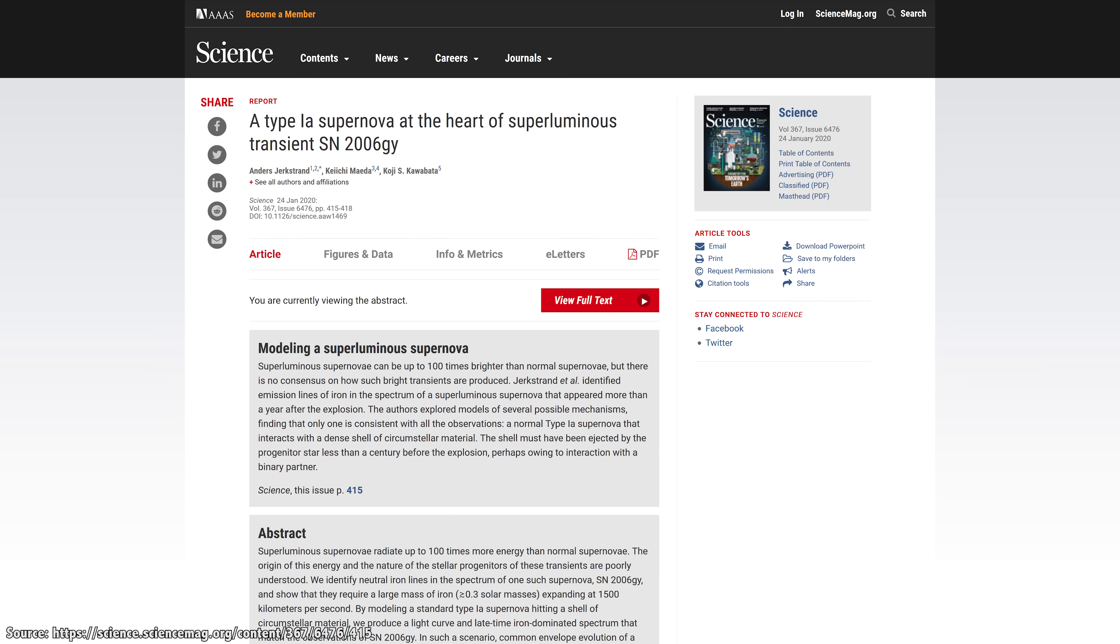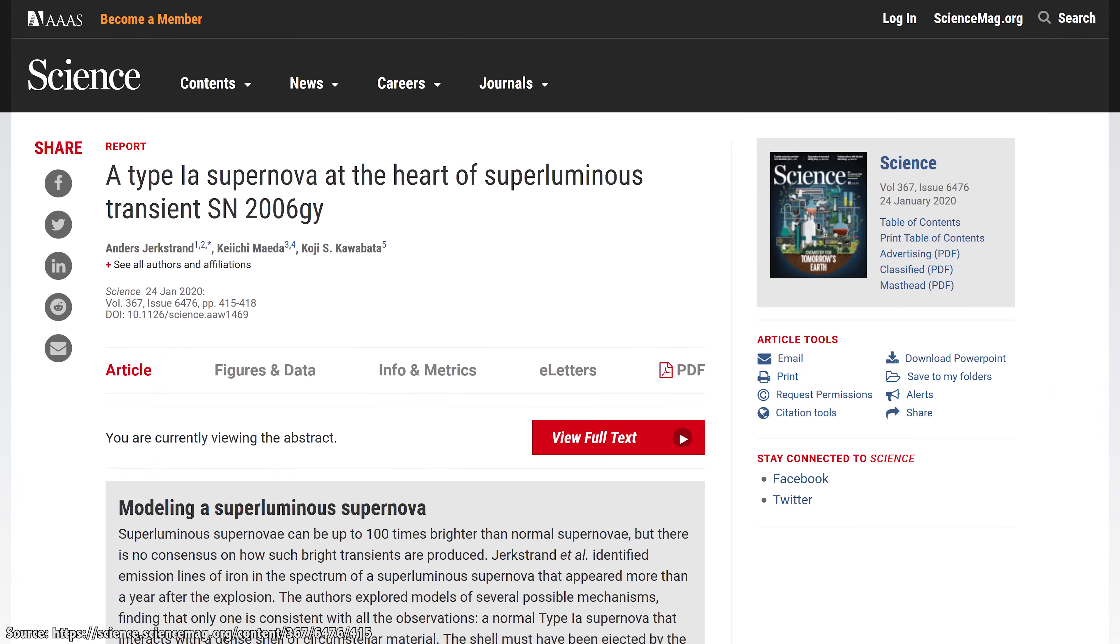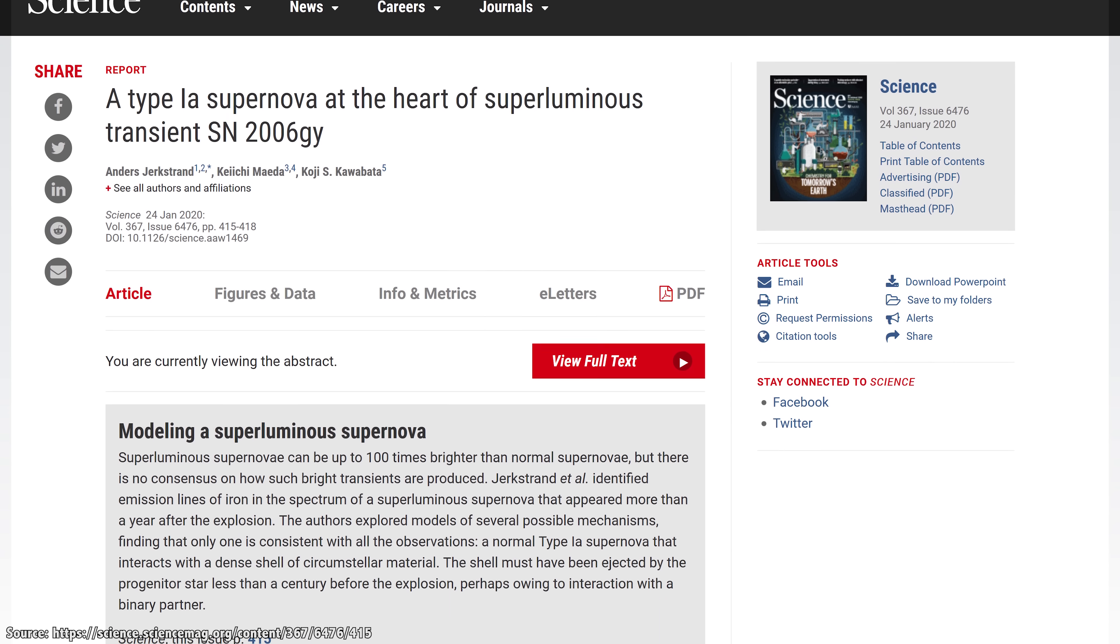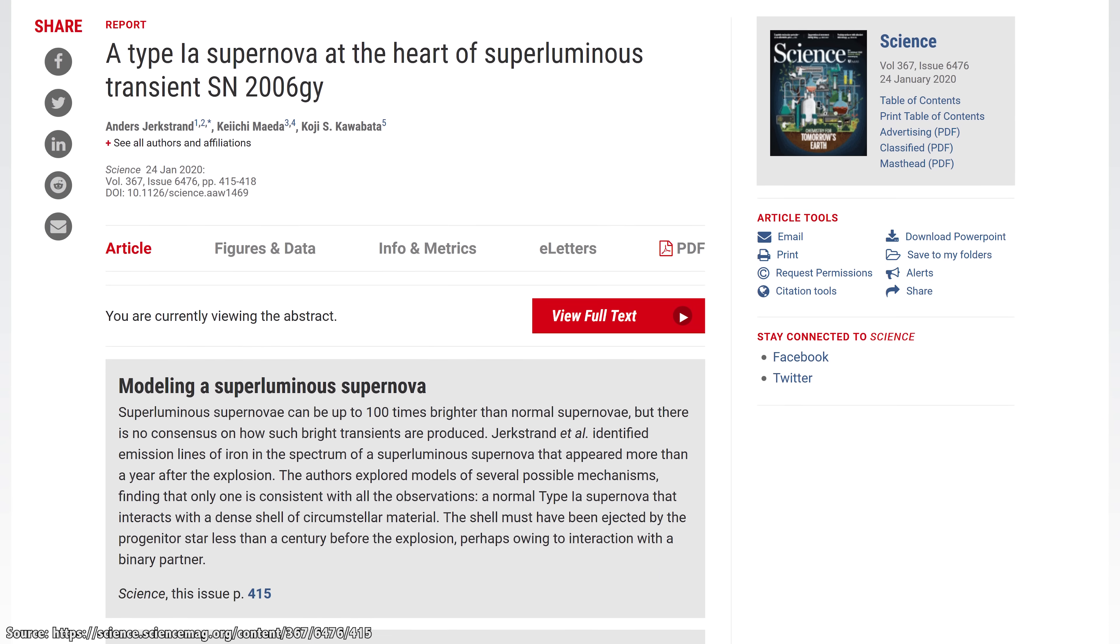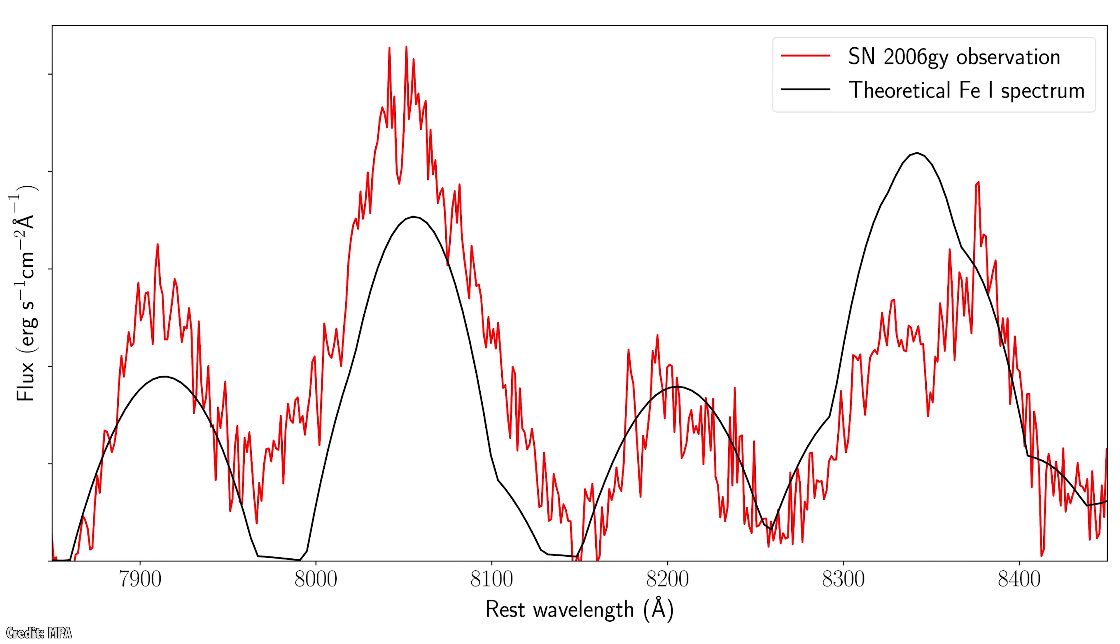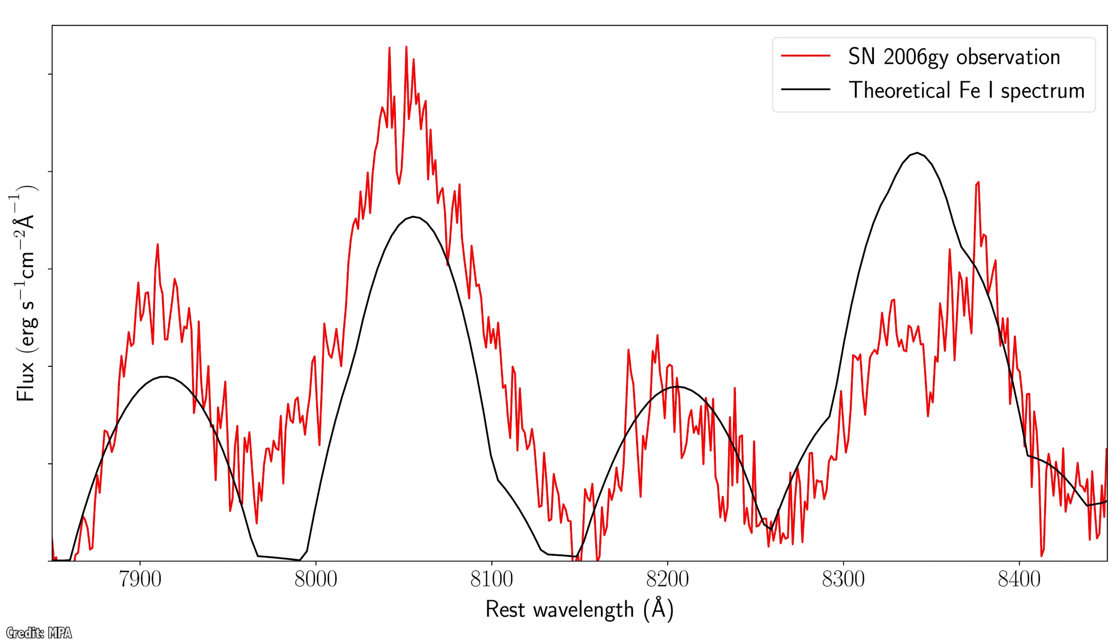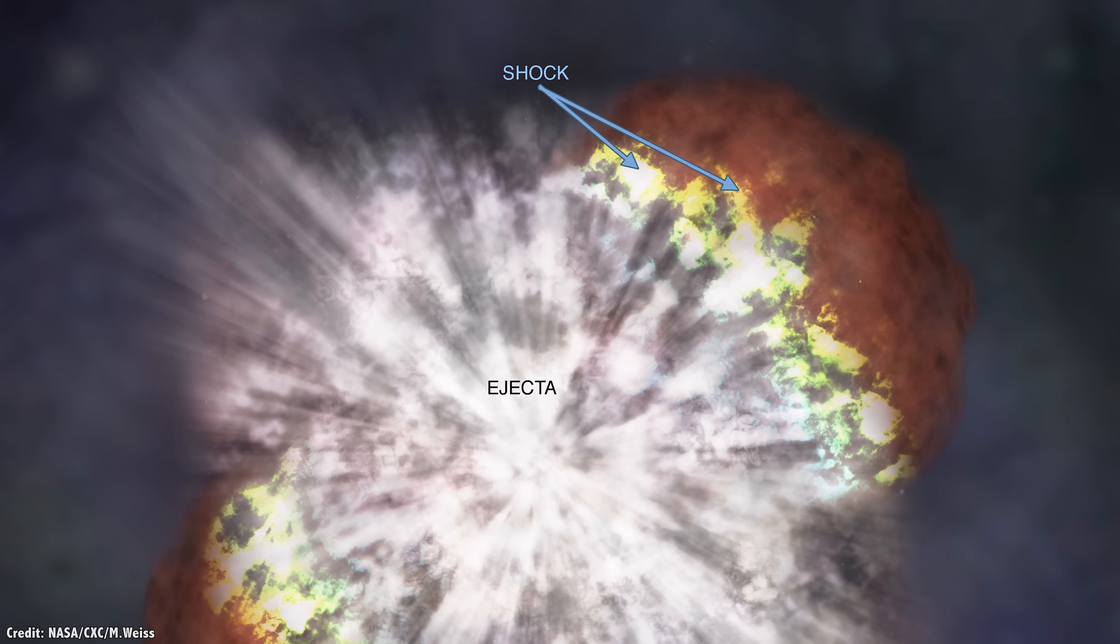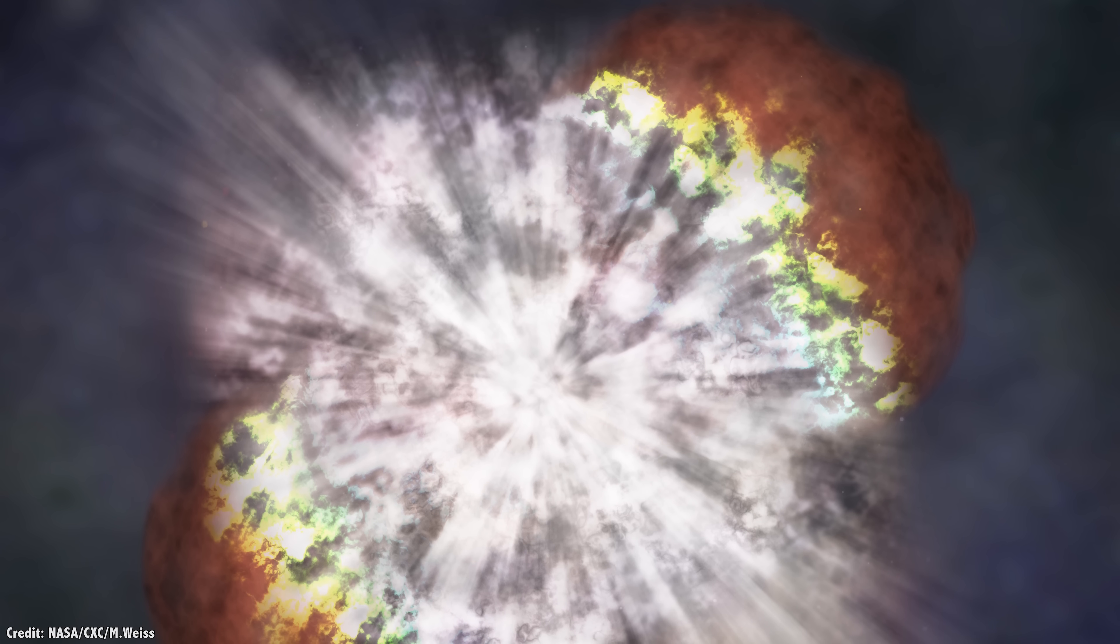Astronomers think they finally have their answer. A new paper published in the journal Science, titled A Type Ia Supernova at the Heart of Superluminous Transient SN 2006 GY, proposes that this explosion occurred because a white dwarf star was enveloped by a companion red giant star. The white dwarf spiraled into the core of the star and exploded. The clue to this sequence of events comes from the detection of neutral iron in the spectral lines of the supernova. Astronomers were able to deduce that a third of a solar mass of iron was created, which is a telltale signature of a Type Ia supernova after all, an exploding white dwarf.